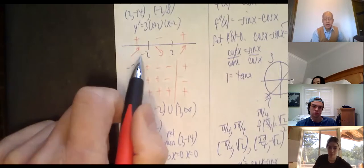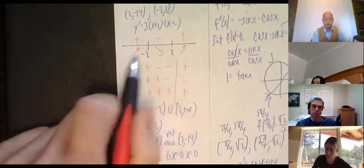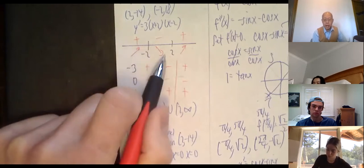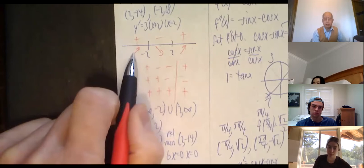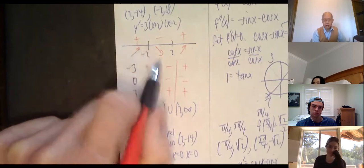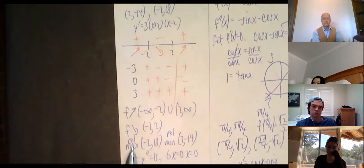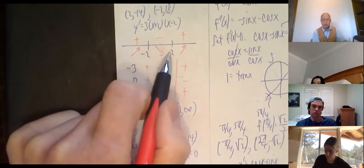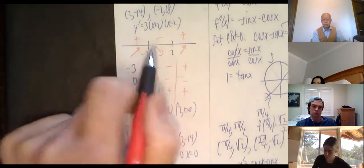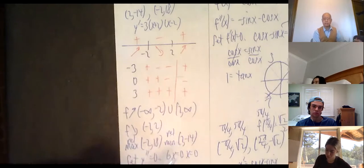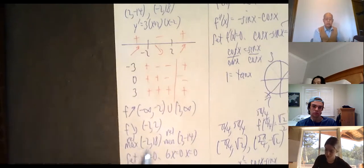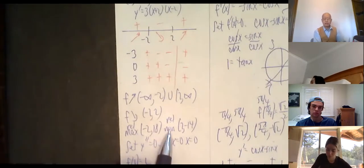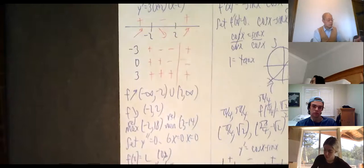First derivative positive means the graph is increasing; negative means decreasing; then positive again — increasing. At x = -2, going up then down, so we have a relative maximum at (-2, 18). At x = 2, going down then up, so we have a relative minimum at (2, -14).